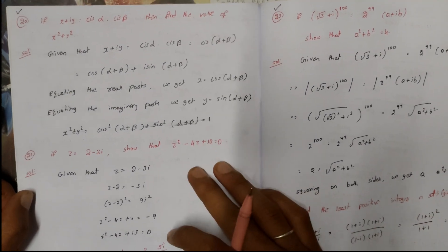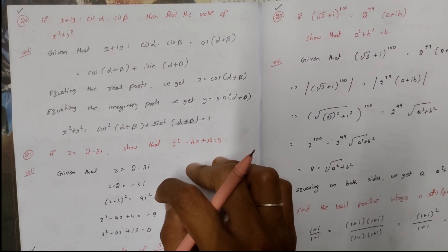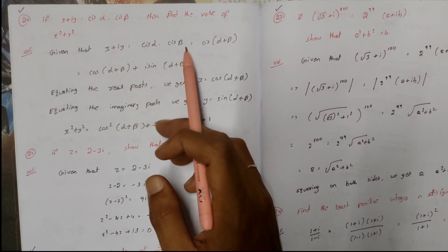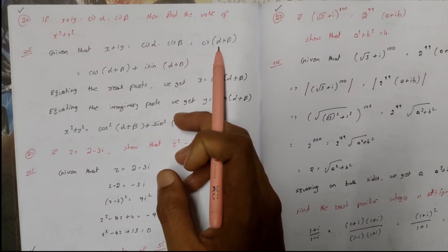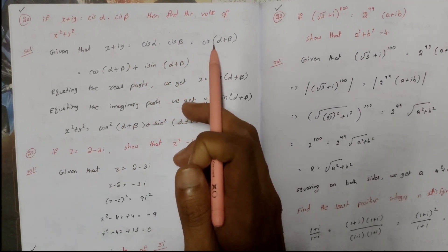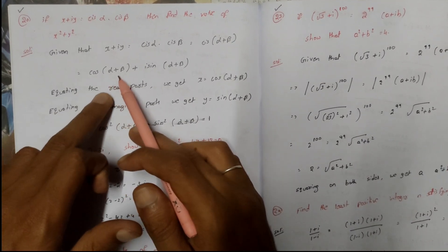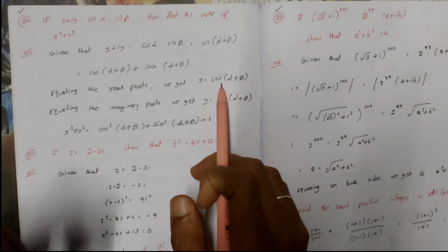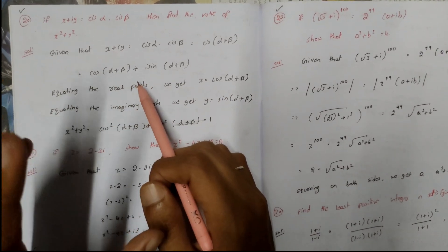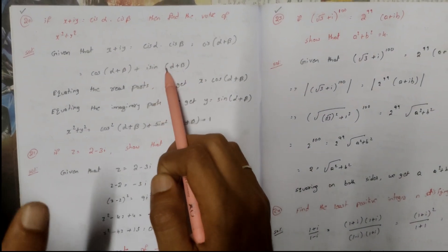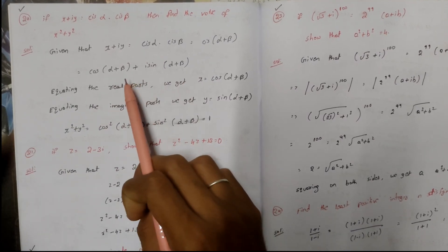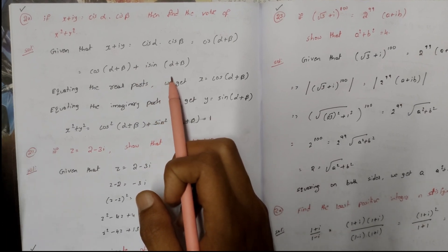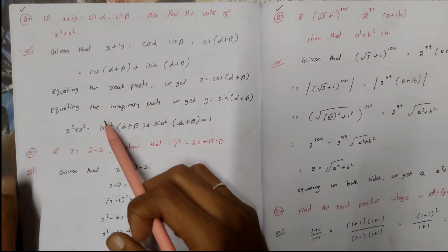If x+iy = cis α · cis β, find x²+y². cis α · cis β = cos(α+β) + i sin(α+β). Equating real parts: x = cos(α+β). Equating imaginary parts: y = sin(α+β). Therefore x²+y² = cos²(α+β) + sin²(α+β) = 1.